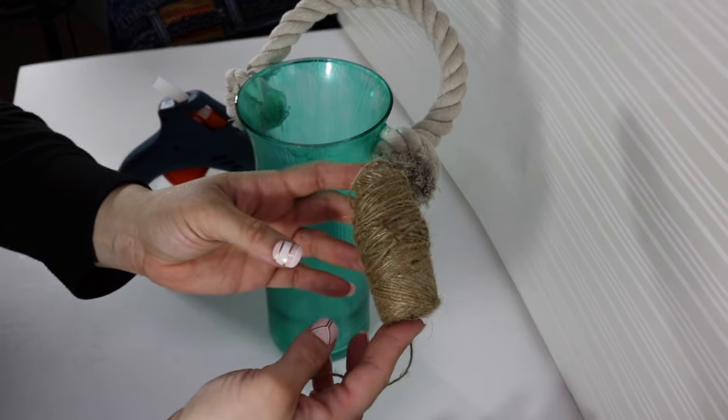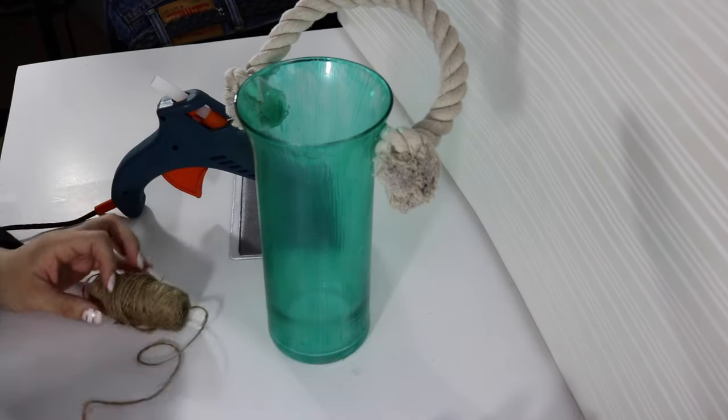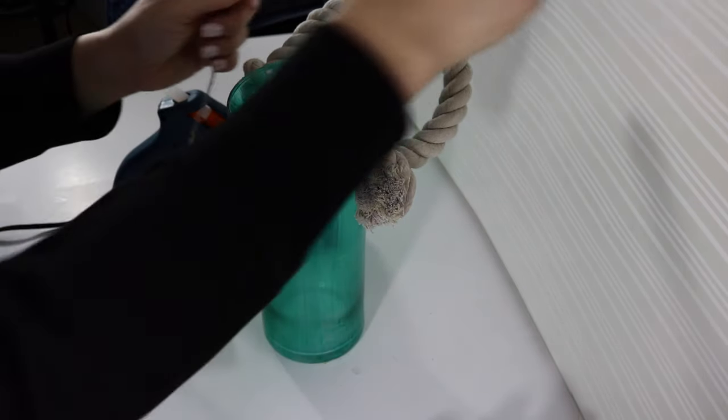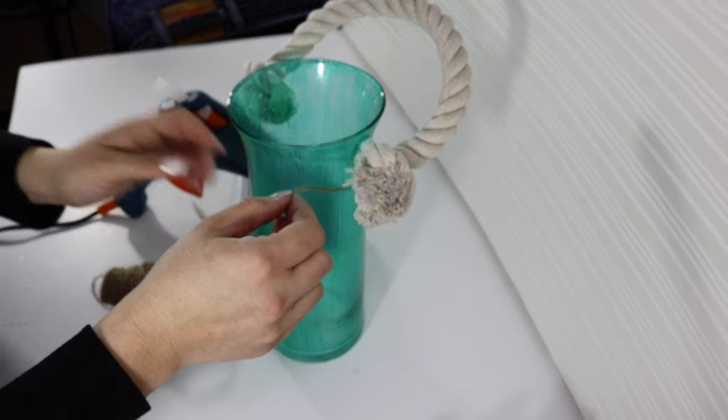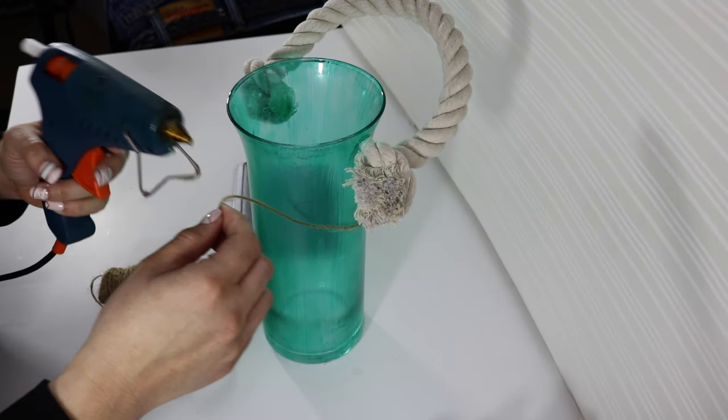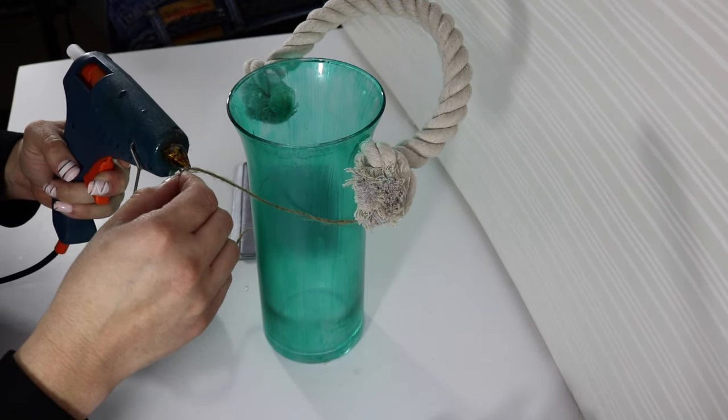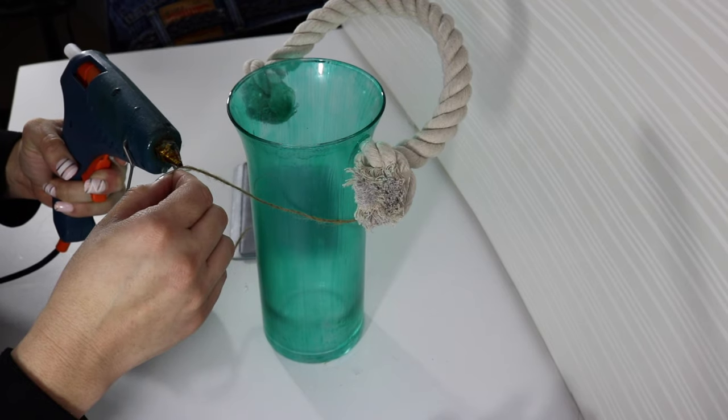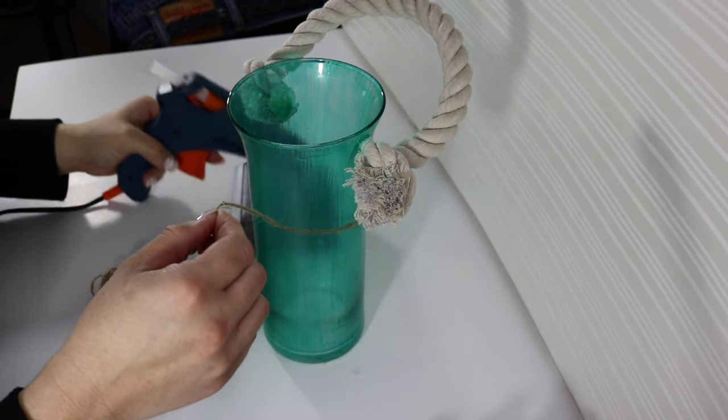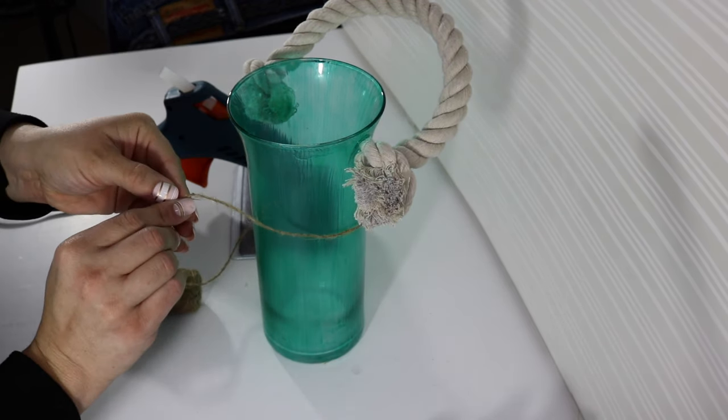Okay so now I have this twine, it comes three to a pack and you can find it in the automobile section at Dollar Tree, comes with two of those tan ones and a green one. So now I'm just adding a little hot glue to the start of it and I'm just gonna wrap it all the way around until I feel it's enough.